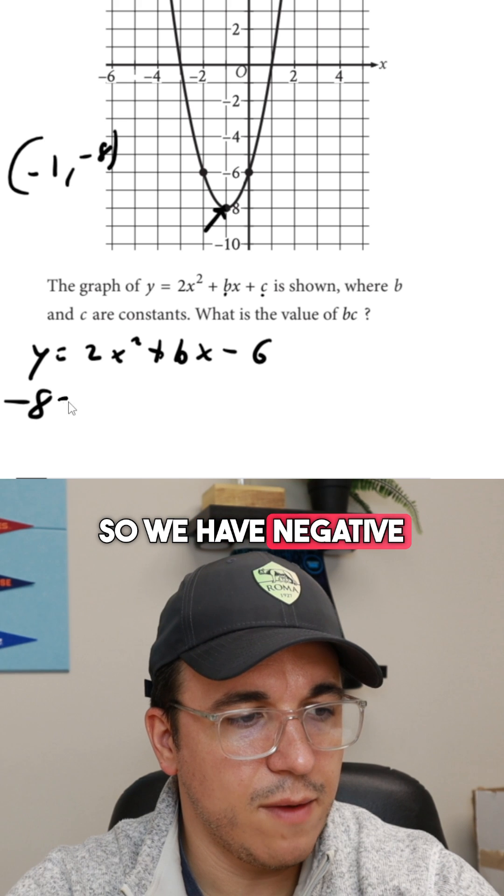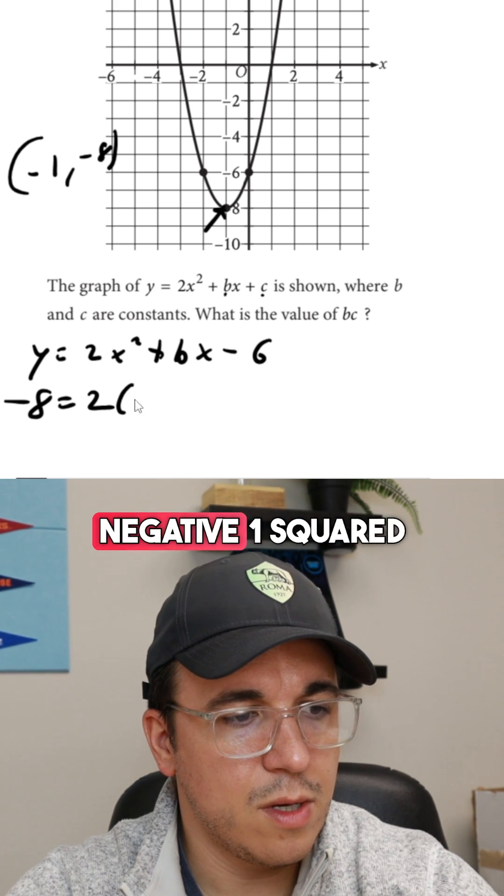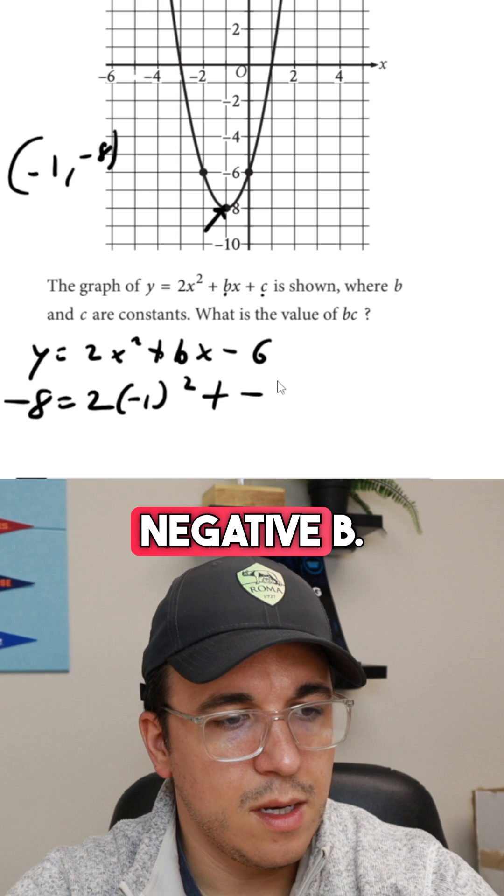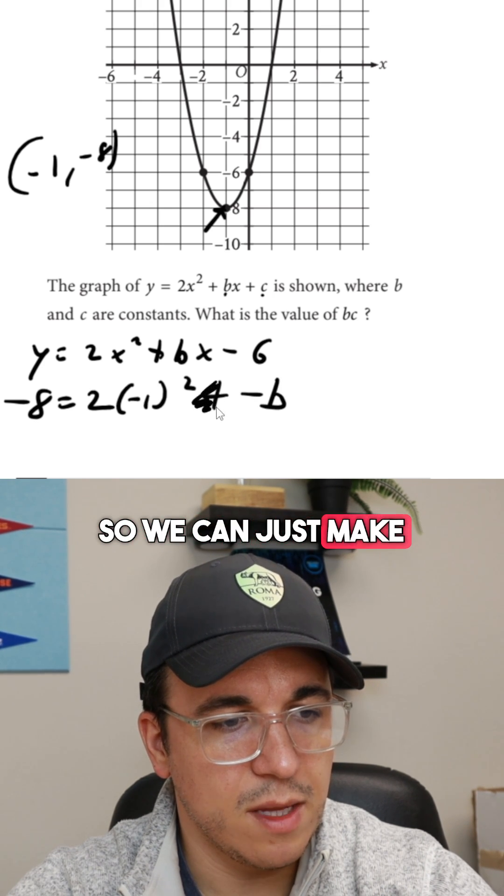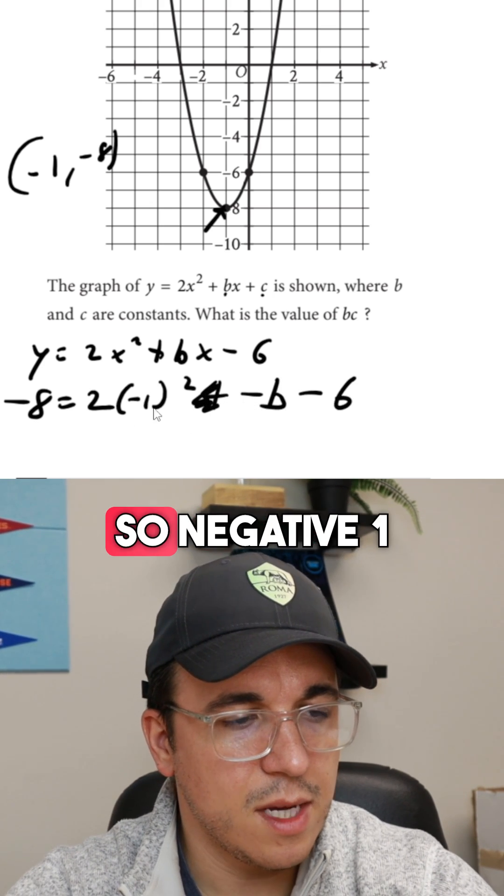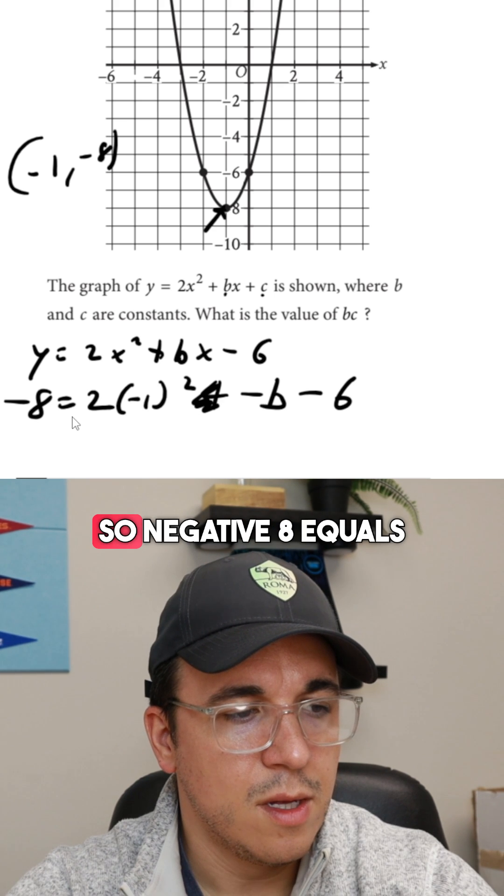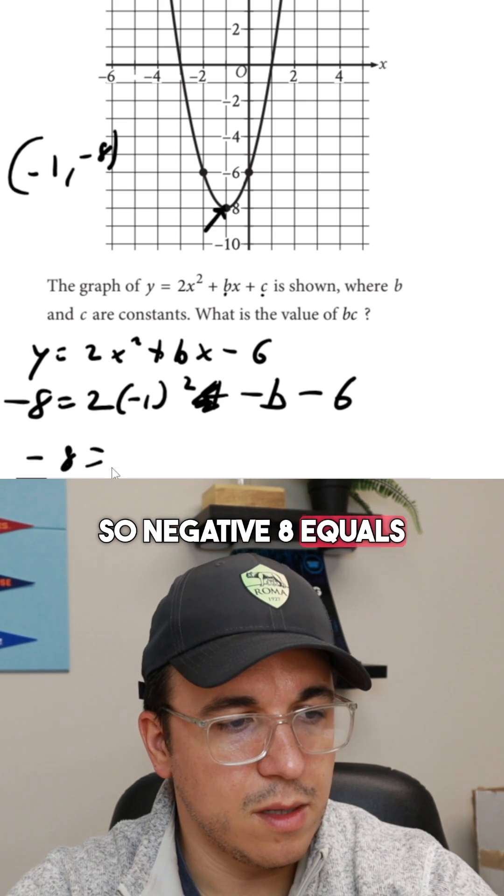So we have negative 8 equals 2 times negative 1 squared plus negative b. So we can just make that minus b minus 6. So negative 1 squared is 1. So negative 8 equals 2 minus b minus 6.